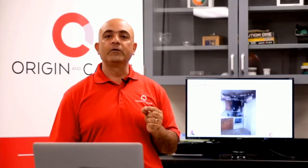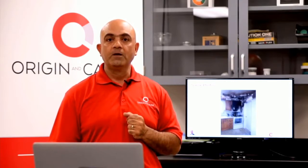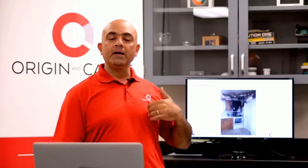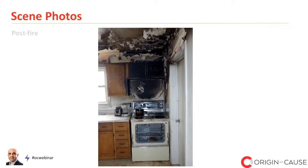Now that we've seen how the fire incident occurred, I want to talk about how a forensic engineer is called upon to go to the scene, conduct an examination, and document the physical evidence. Here are some photos I took conducting this examination post-fire. This first photograph shows an overall view of the kitchen area in the corner where the electric range is located. You can see the stove in position, the pot still on the rear left surface top heating element, and burn patterns on the sidewall and wall behind the electric range, with a lot of damage up in the ceiling space.